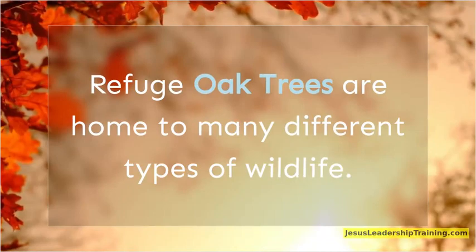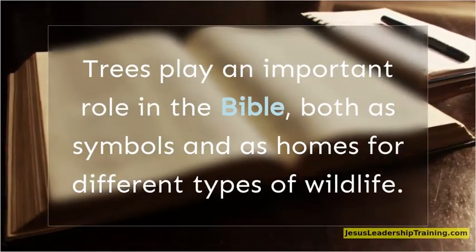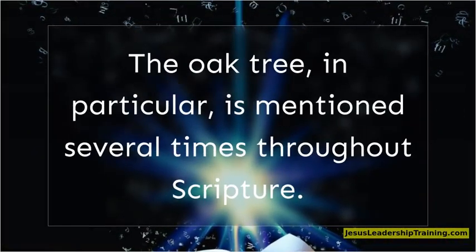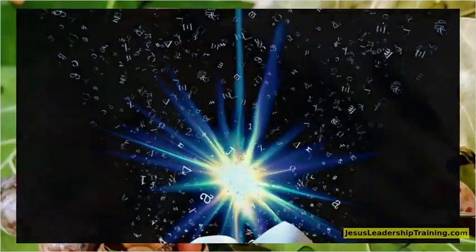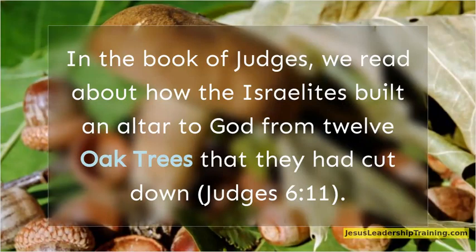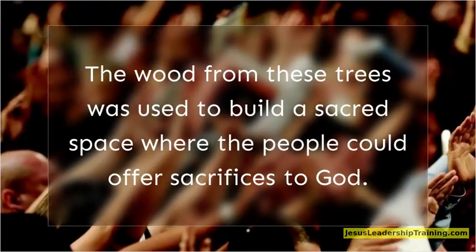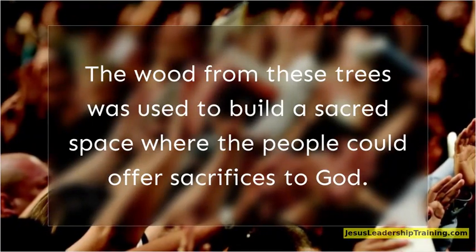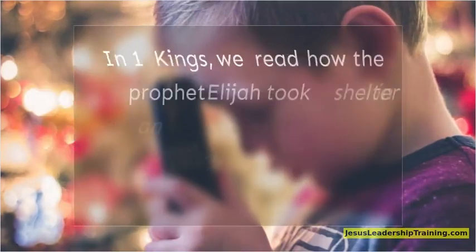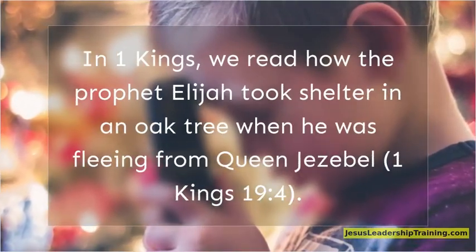Refuge: Oak trees are home to many different types of wildlife. Trees play an important role in the Bible, both as symbols and as homes for different types of wildlife. The oak tree in particular is mentioned several times throughout Scripture. In the book of Judges, we read about how the Israelites built an altar to God from 12 oak trees that they had cut down (Judges 6:11). Oak trees were also regarded as places of refuge and safety. In 1 Kings, we read how the prophet Elijah took shelter in an oak tree when he was fleeing from Queen Jezebel (1 Kings 19:4).